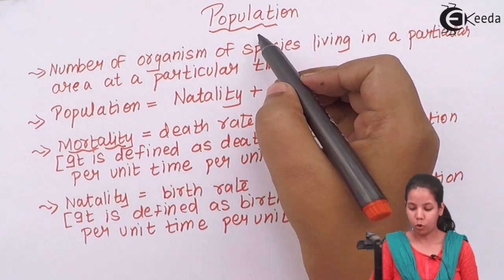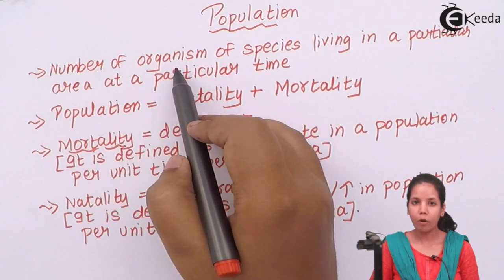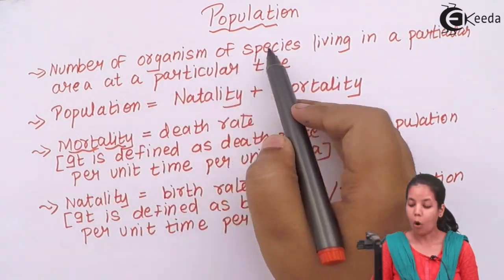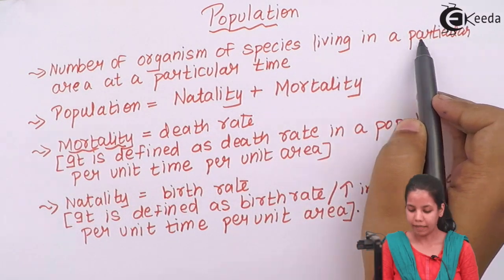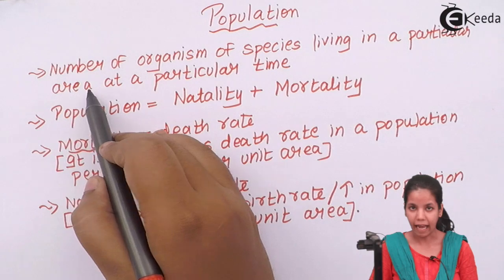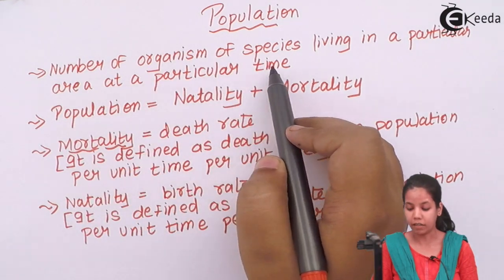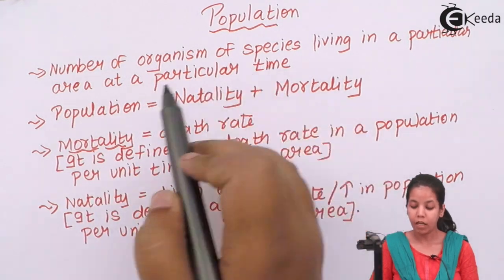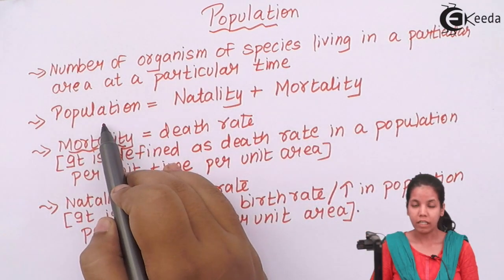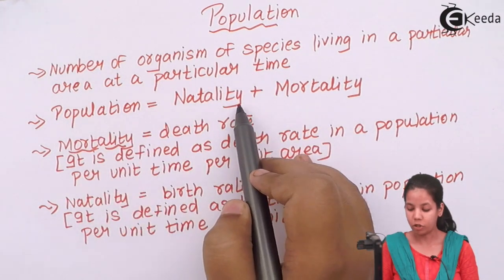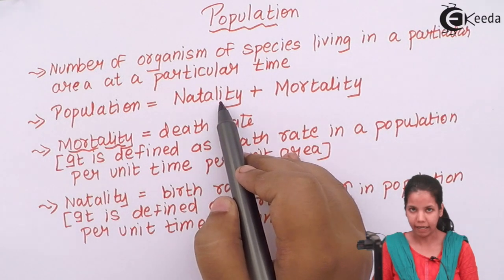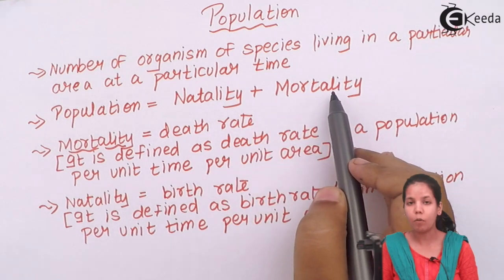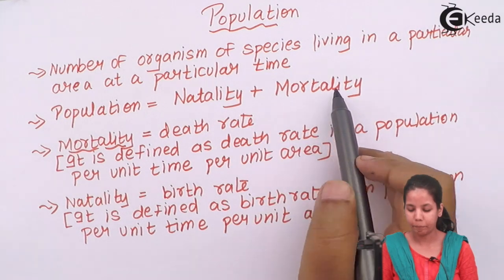So the definition of population is: the number of organisms of a species living in a particular area at a particular time. Population is a mixture or amalgamation of natality plus mortality.